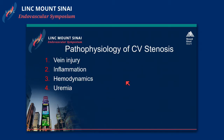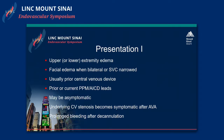The pathophysiology is multiplexed. You have direct vein injury from the stick site, perivascular thrombosis, peridevice thrombosis. There's an inflammatory process that gets set up. Additionally, patients with AV communications have flow dynamics that set the patient up for vascular injury in the central venous system. All of this is complicated by uremia, which increases the inflammatory process.